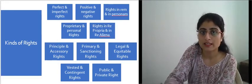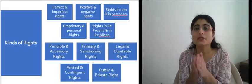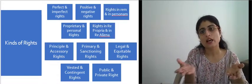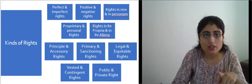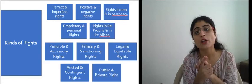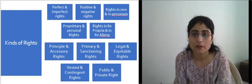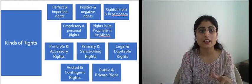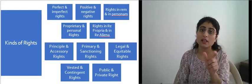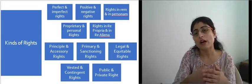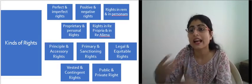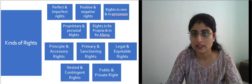The next kind is primary and sanctionary rights, which is similar to principal and accessory rights. Primary rights are the basic rights — rights in rem such as the right to reputation — which exist ipso facto. Sanctionary rights are the consequential rights that arise from the violation of another person's rights. When a violation happens and protection is needed, the protective right arising from that violation is called the sanctionary right.